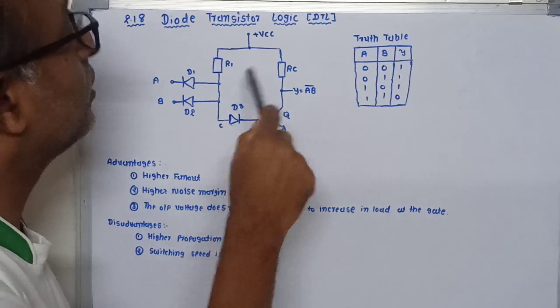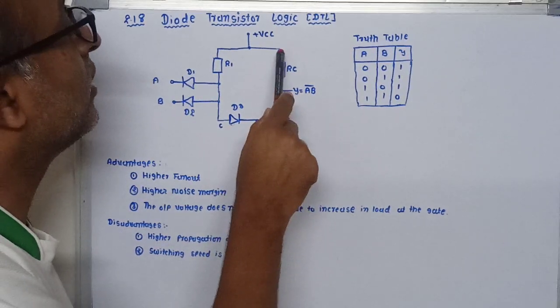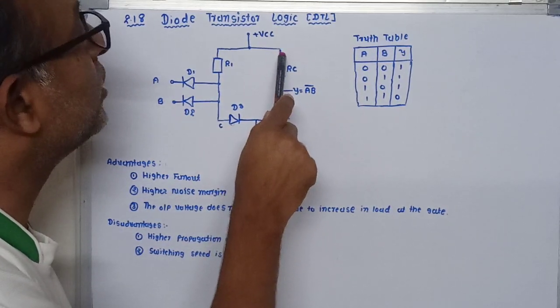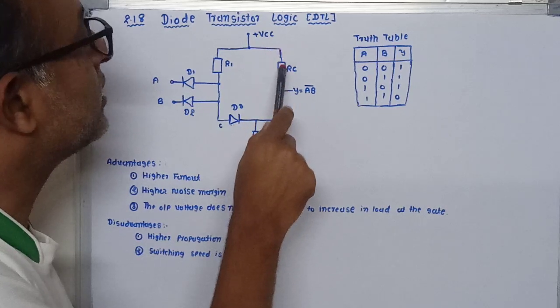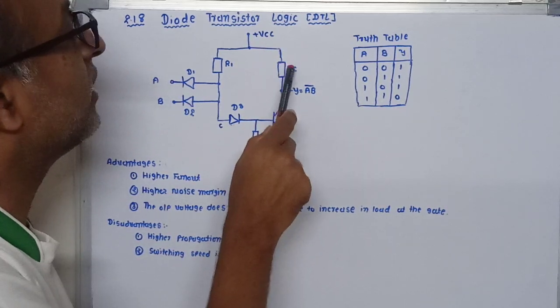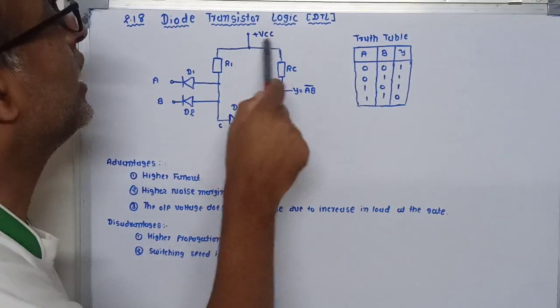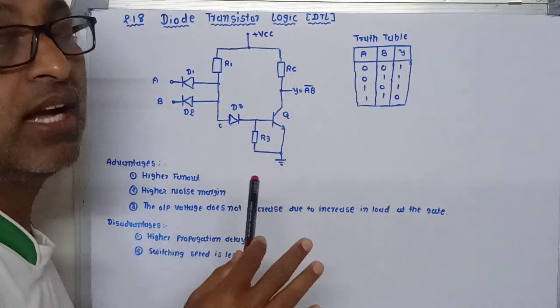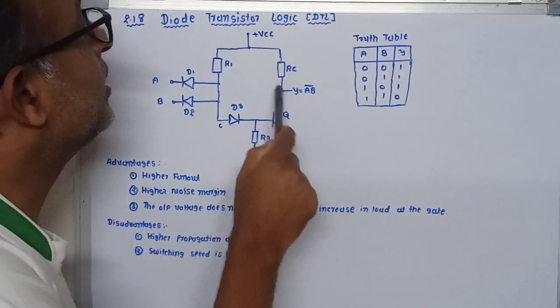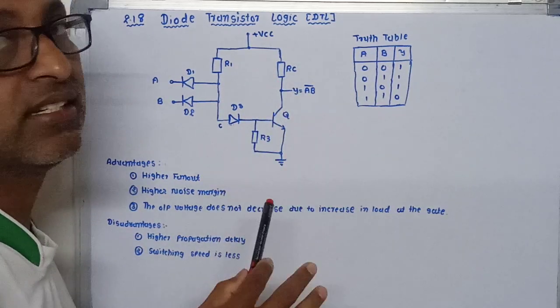Due to this current passing through, the supply voltage is grounded through this collector resistance Rc. Whatever voltage we are applying to this circuit is ideally dropped in this collector resistance.